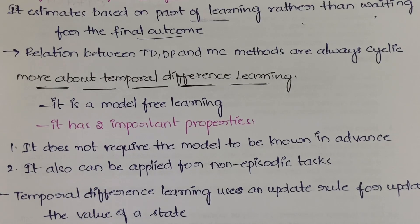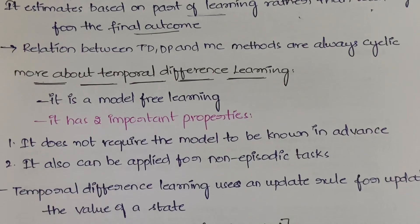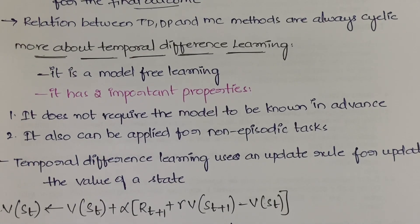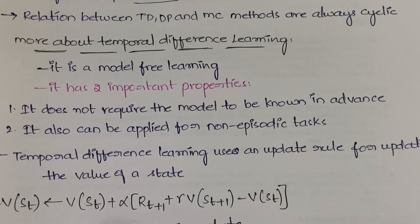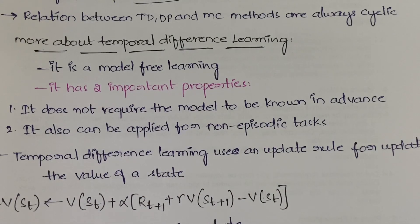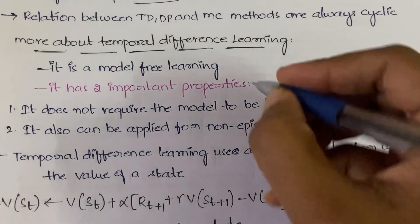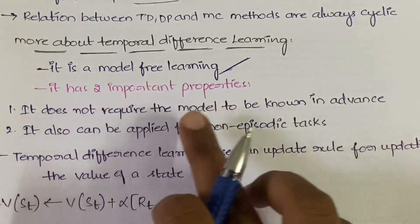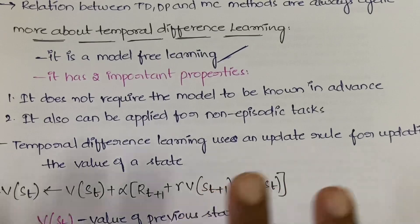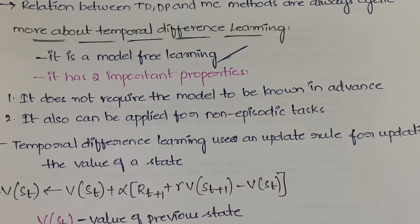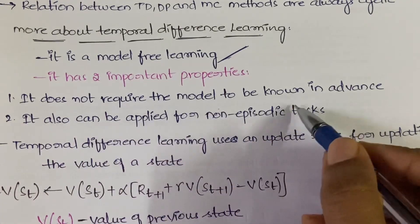Temporal difference has two main properties: one from Monte Carlo and the other from dynamic programming. Temporal difference learning is model-free learning — it learns from raw experiences instead of depending on a predefined model. Those two important properties are: it does not require any model to be known in advance, and it can be applied to non-episodic tasks.